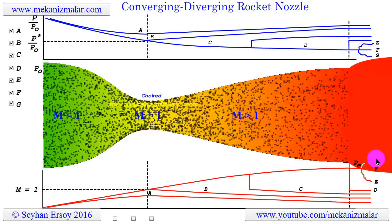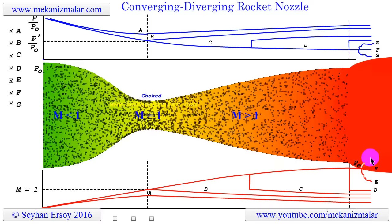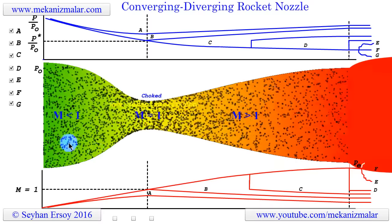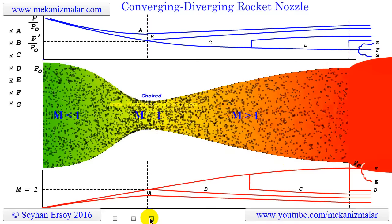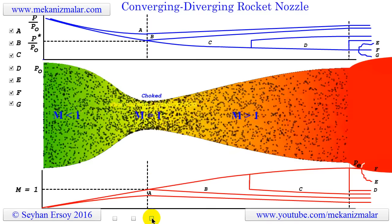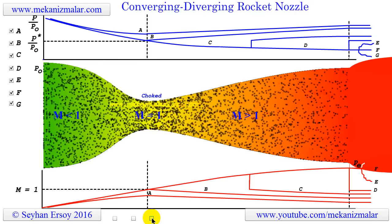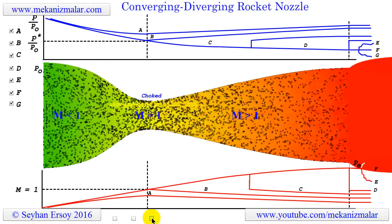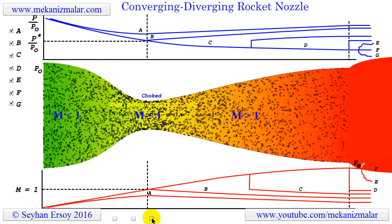This flow behavior is also inefficient since some thrust force goes outward from the rocket instead of going in the opposite direction of the rocket flight. This situation happens when the rocket is working in its optimum efficiency and keeps ascending to the thinner part of the atmosphere.